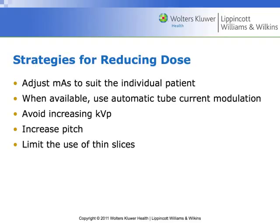Here are some strategies for reducing or optimizing dose. Use auto mA or adjust the mA to the appropriate patient size. When available, use automatic tube current modulation — in GE it's called auto mA. Avoid increasing the KVP; keep it specific to that protocol. You can increase the pitch as long as you won't lose too much information. Limit the use of thin slices and try to use the maximum slice size that's appropriate for the exam. These are conversations to have with the radiologist and managing technologist.